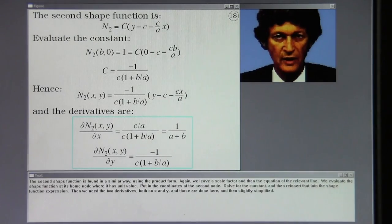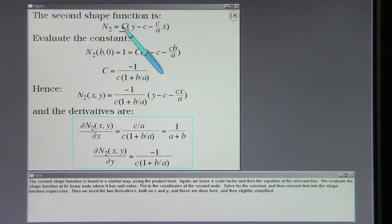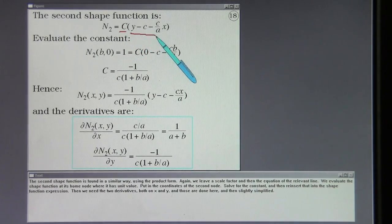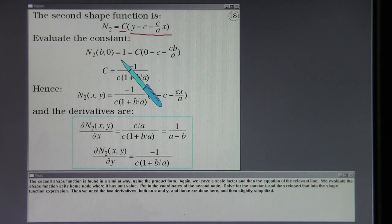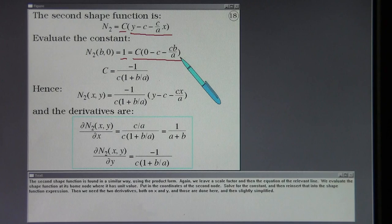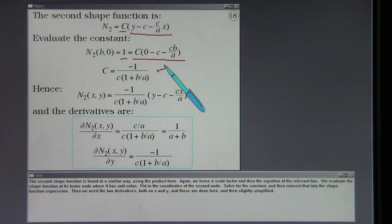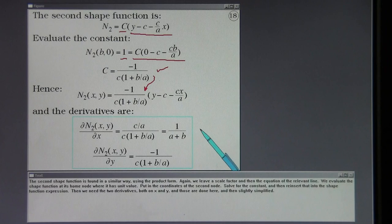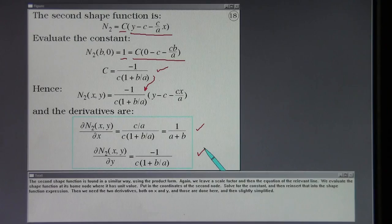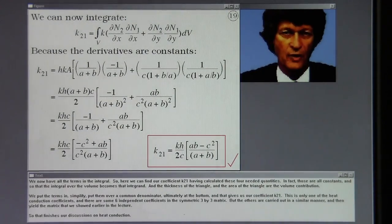The second shape function is found in a similar way using the product form. Again we leave a scale factor and then the equation of the relevant line. We evaluate the shape function at its home node where it has unit value. Put in the coordinates of the second node, solve for the constant and then reinsert that into the shape function expression. Then we need the two derivatives both on X and Y and those are done here and then slightly simplified. We now have all the terms in the integral.